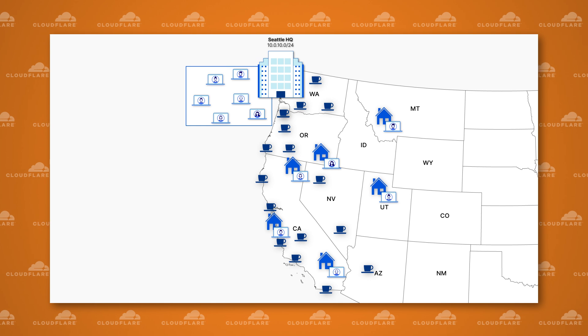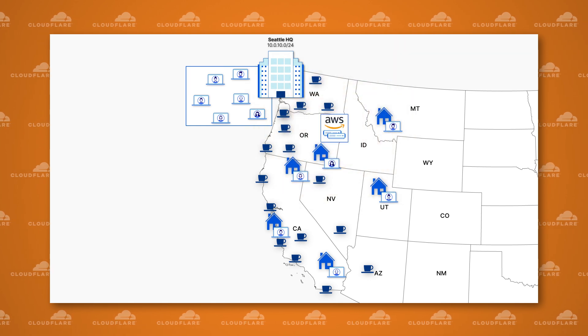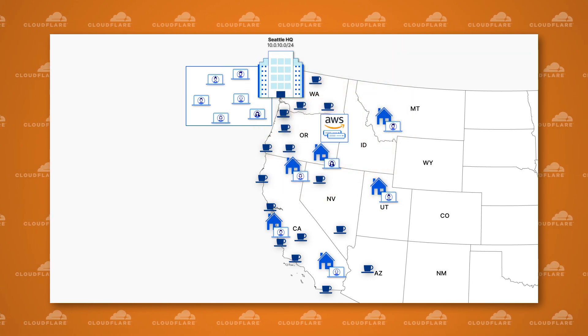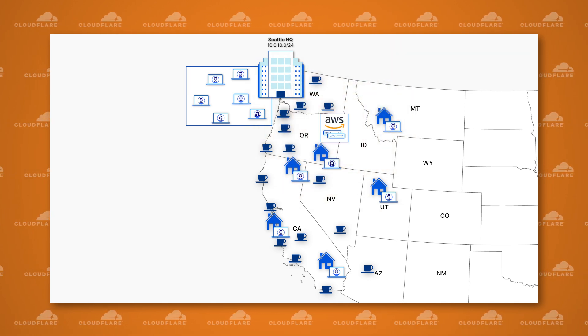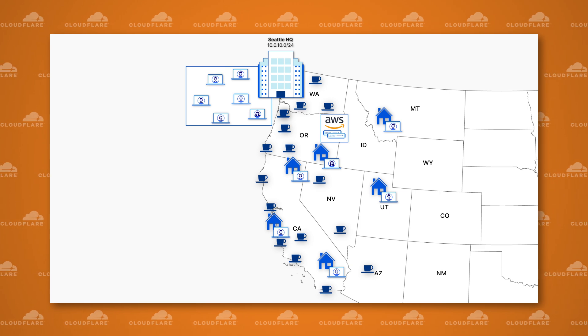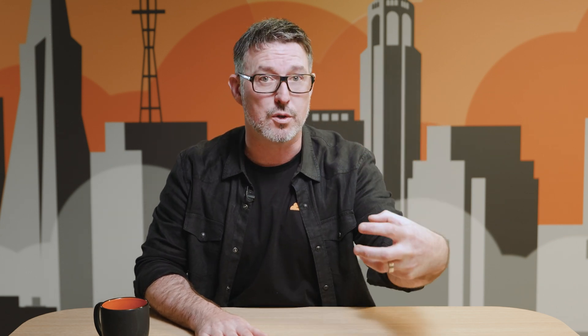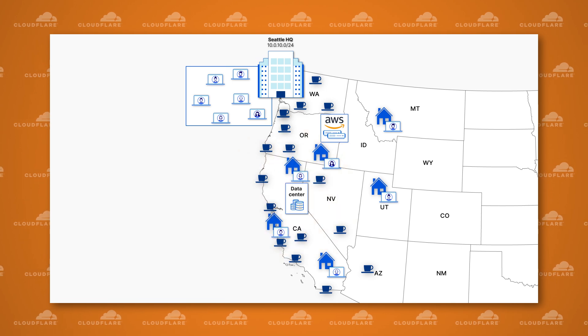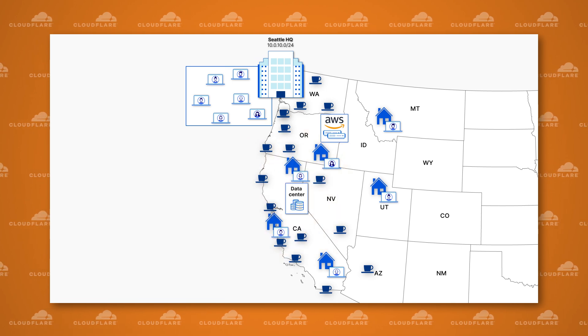They also have an internal company Wiki running in a virtual environment in Amazon Web Services with its own virtual private network. And finally, the security cameras at all their coffee shops need to backup data to a central service running on servers hosted in a rack in a data center in San Jose.